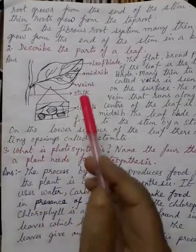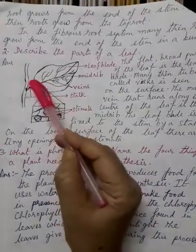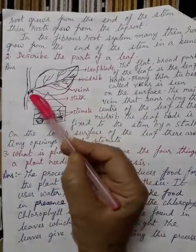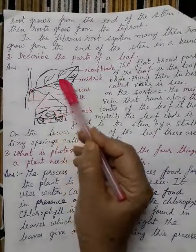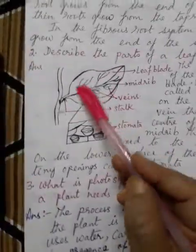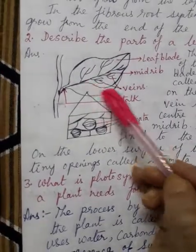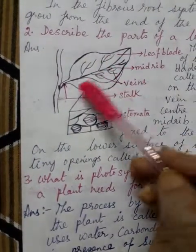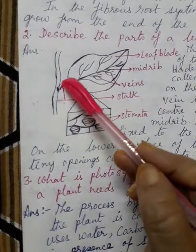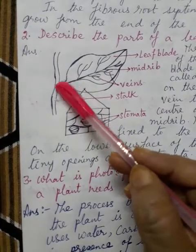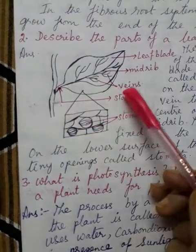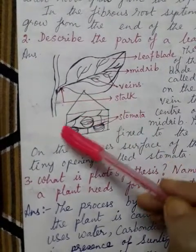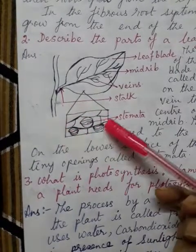To repeat once more: the main part of the leaf is called the leaf blade. Through the leaf the main vein goes, which is called the midrib, and the side veins are simply called the veins. The part attached to the main stem of the plant is called the leaf stalk. Under the leaf lie small holes, shown in a magnified manner, called the stomata.